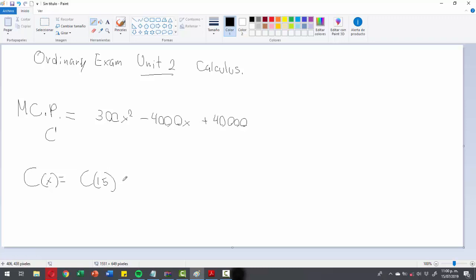Which is the integral from 10 to 15 of the function, which is 300x squared minus 4000x plus 40,000 from 10 to 15, which is a simple integral.